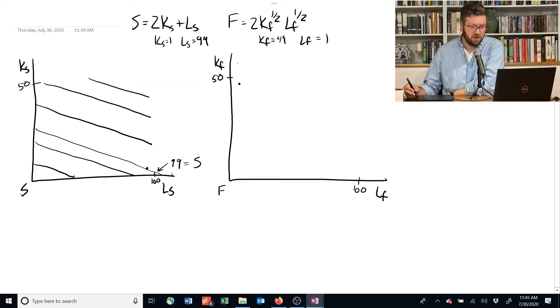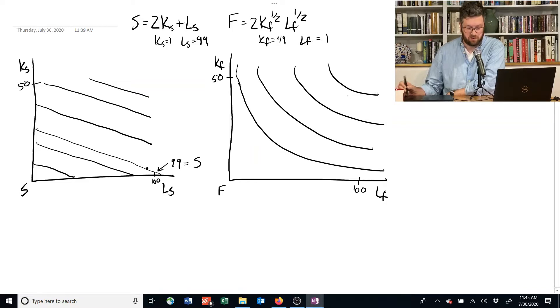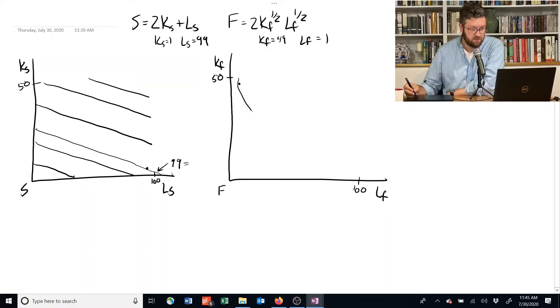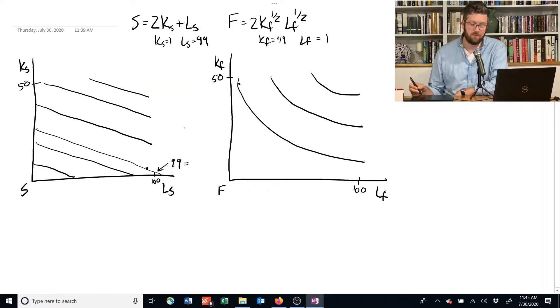Over here, these things look more like this. They're Cobb-Douglas production functions, and so they've got this curve to them. I'm going to try and draw them again so that they, let's do this way. I'm drawing the isoquants.